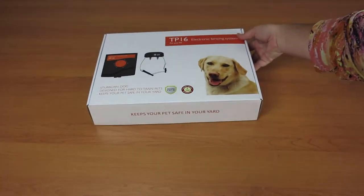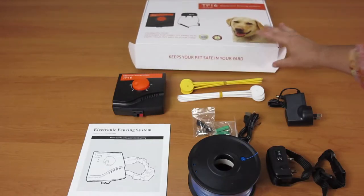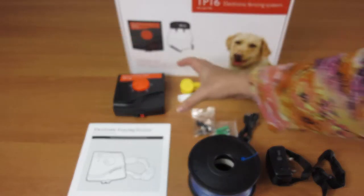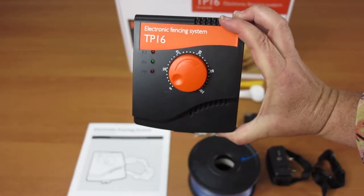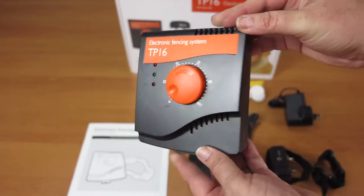This waterproof electronic dog fencing is all about making sure your pets learn where they can and cannot go. One big quick fact, we are so confident in our product that we are willing to give you a one year warranty and 30 day money back guarantee.